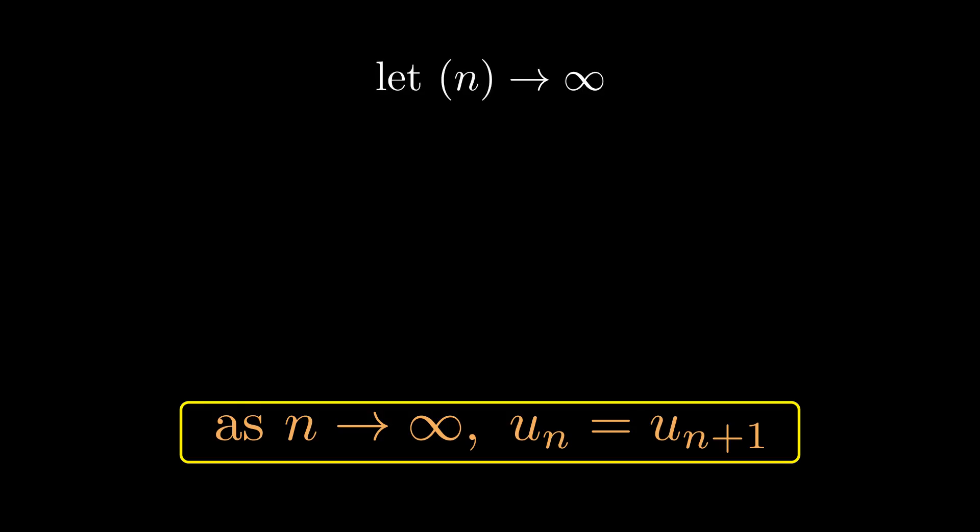Let's let n tend to infinity, which means we're letting n become the largest possible number. If n grows to be infinity, then n plus 1 will also become infinity, since infinity is equal to infinity plus 1.